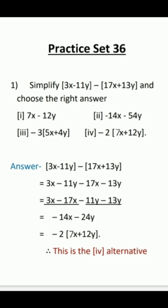11 plus 13 is 24, giving minus 24y. Now take out the common multiple. The common factor is minus 2: 2 into 7 is 14, and 2 into 12 is 24, with minus into plus giving minus 24y. So in the bracket write 7x plus 12y, and the answer is minus 2 in bracket 7x plus 12y. This is the fourth alternative.